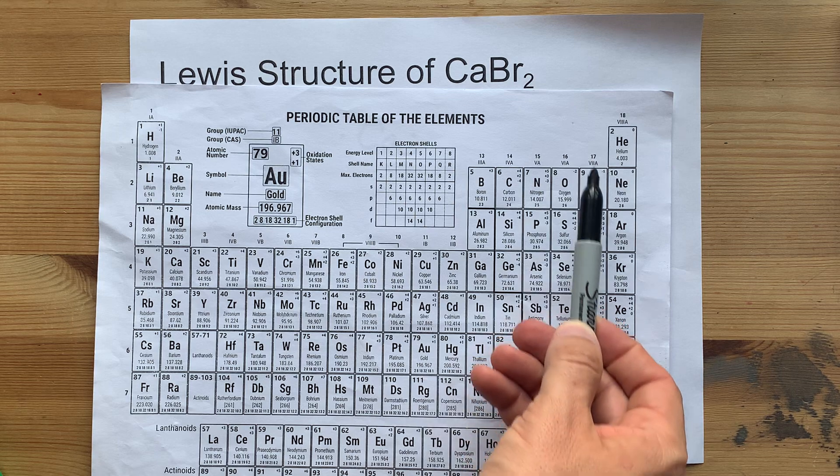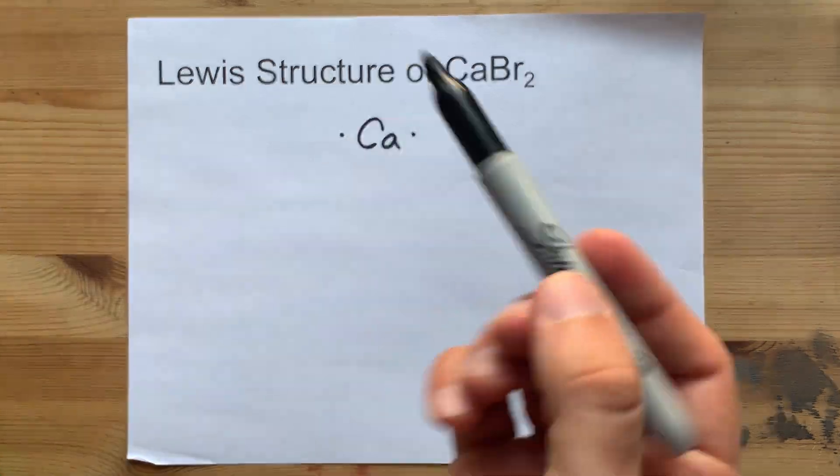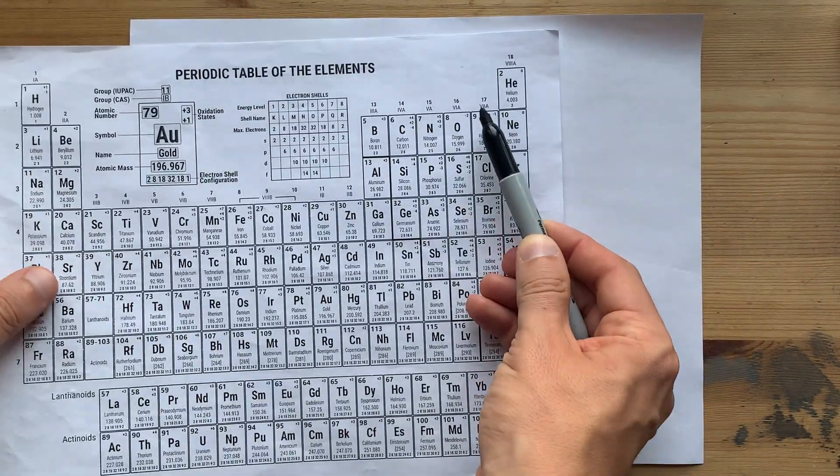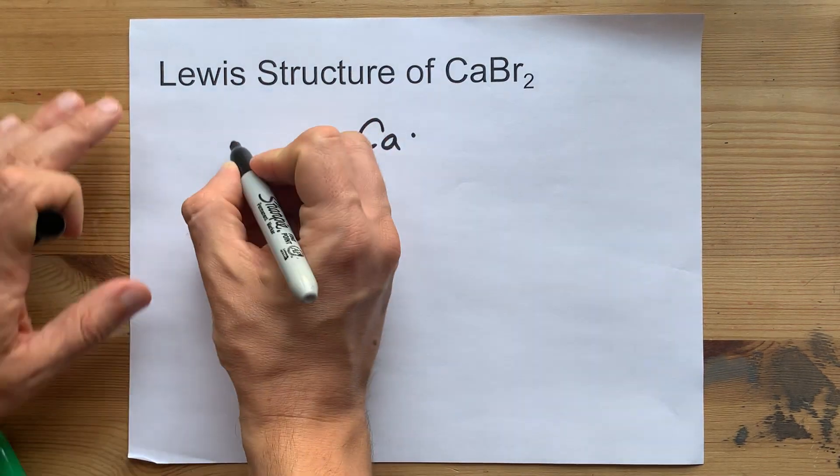Bromine is one of the halogens. It's in the second last column of the table, so brings seven valence electrons. You can also know that because if it's in group 17, it has seven valence electrons.